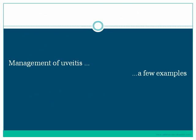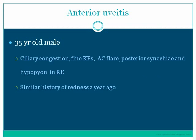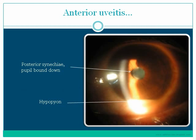A 35-year-old male presents with ciliary congestion, fine keratic precipitates, non-granulomatous anterior chamber flare and cells, posterior synechiae, and hypopion in the right eye, with a similar history of redness a year ago. The diagnosis here is anterior uveitis. The photo shows posterior synechiae, a bound-down pupil, and inferiorly a hypopion.